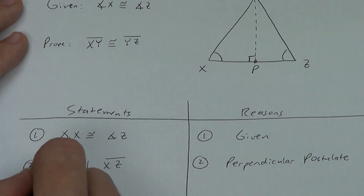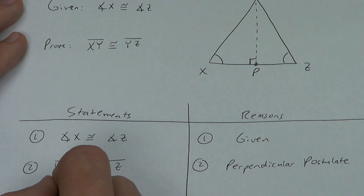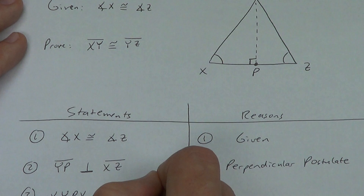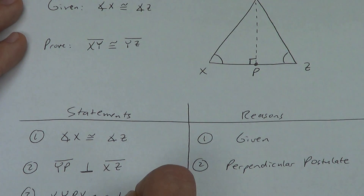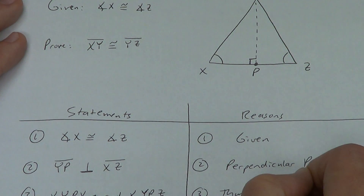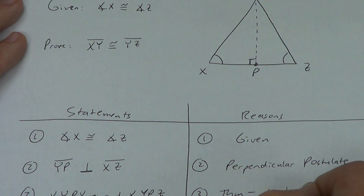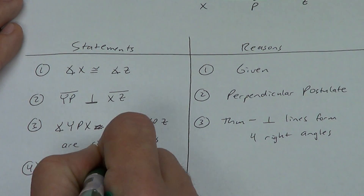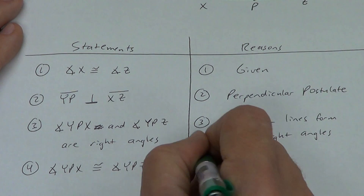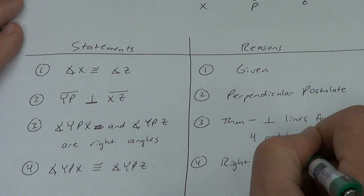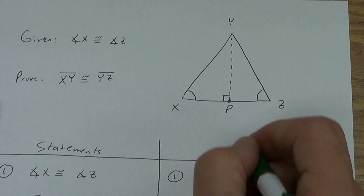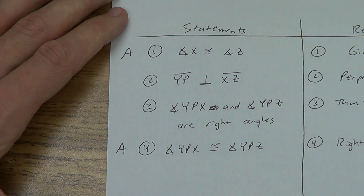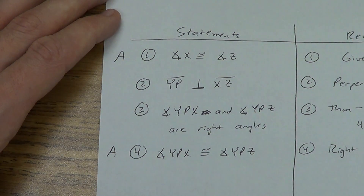Perpendicular lines form four right angles, so angle YPX and angle YPZ are right angles — from the theorem that perpendicular lines form four right angles. Then angle YPX is congruent to angle YPZ by the right angle congruence theorem. I'll mark that angle in my picture. I now have an angle from step one and one from step four, but angle-angle is not enough, and angle-angle-angle is not enough either — I need some sides.